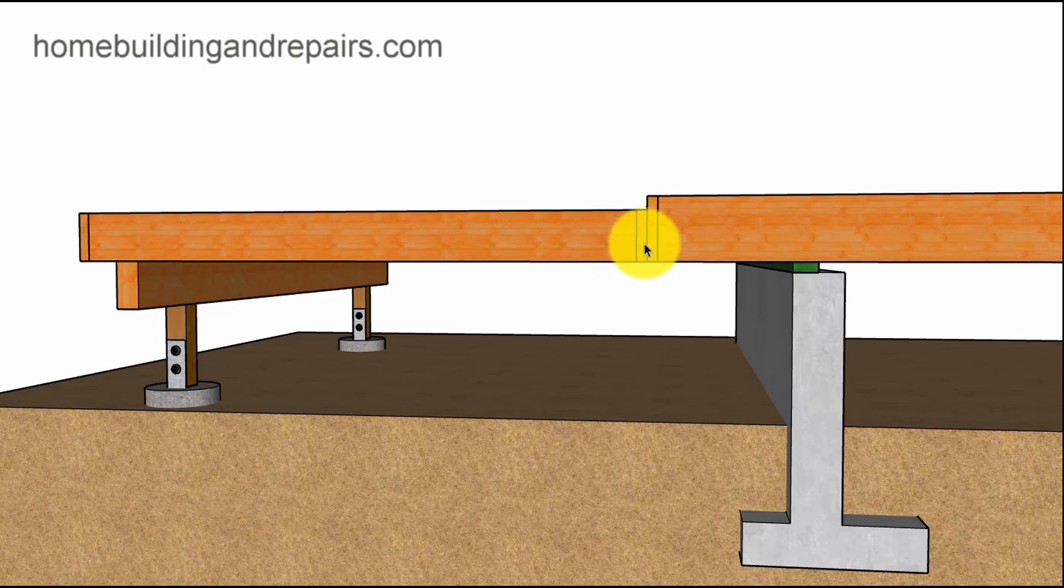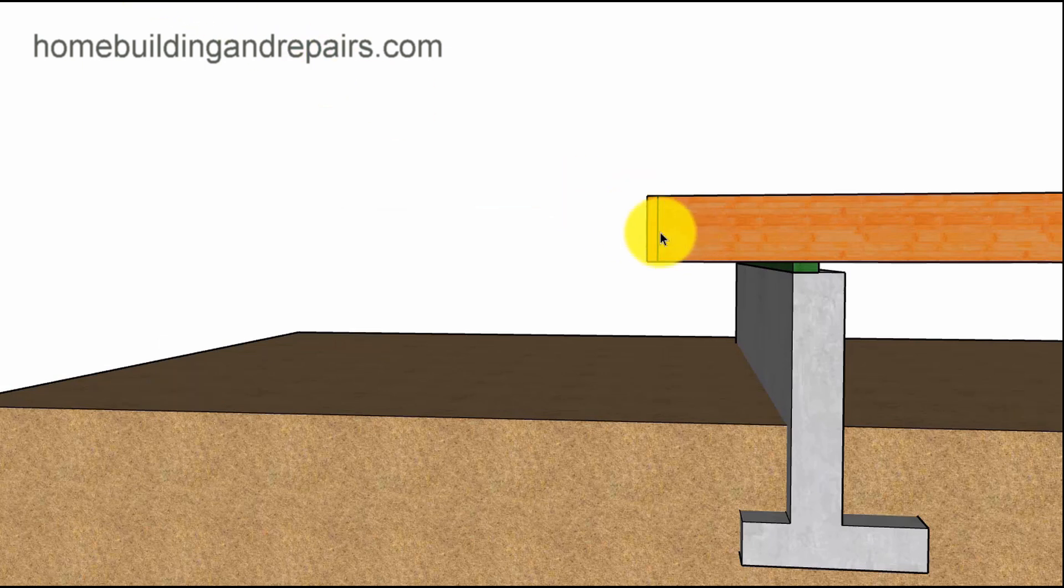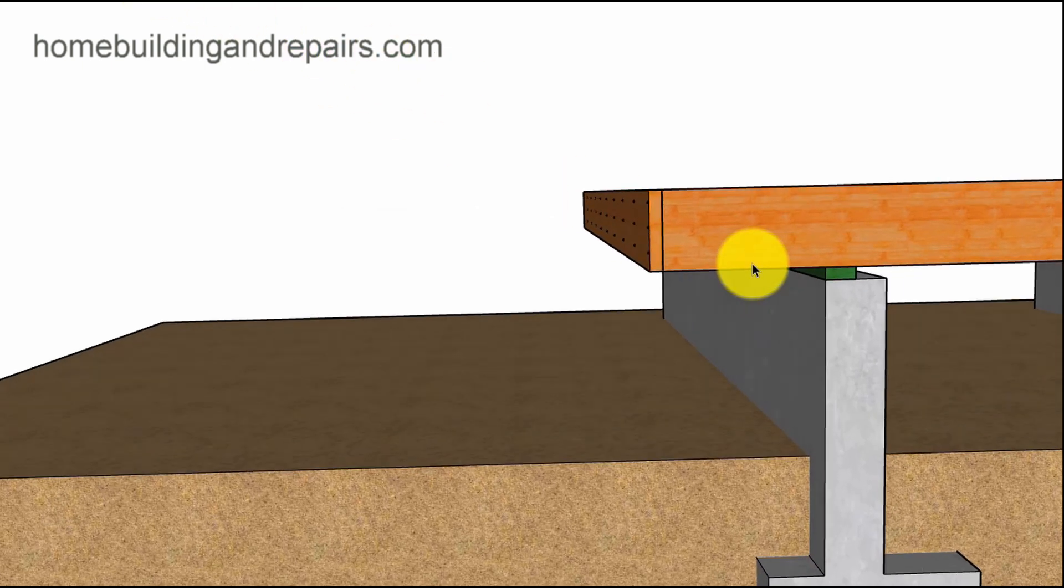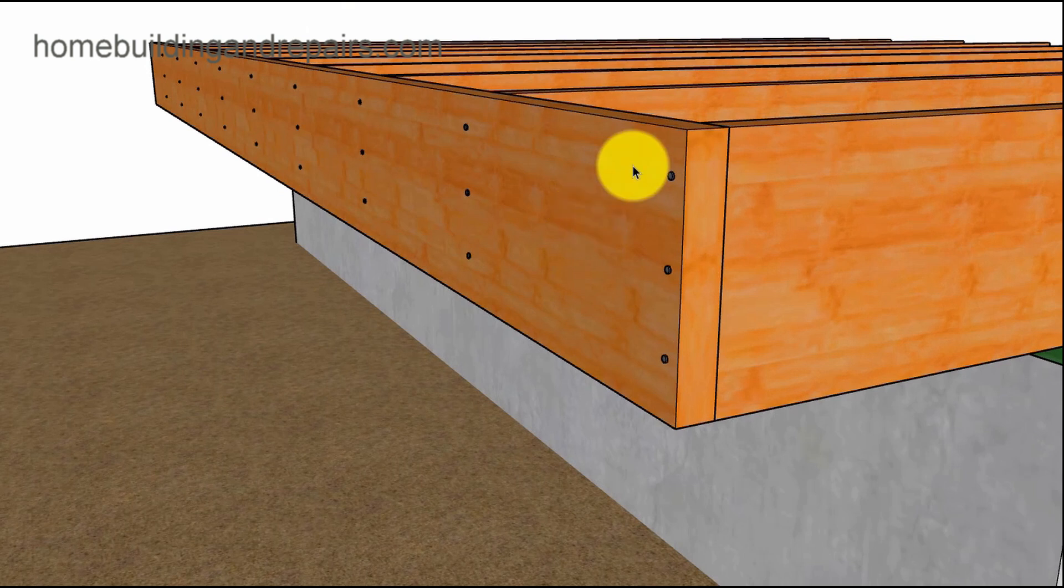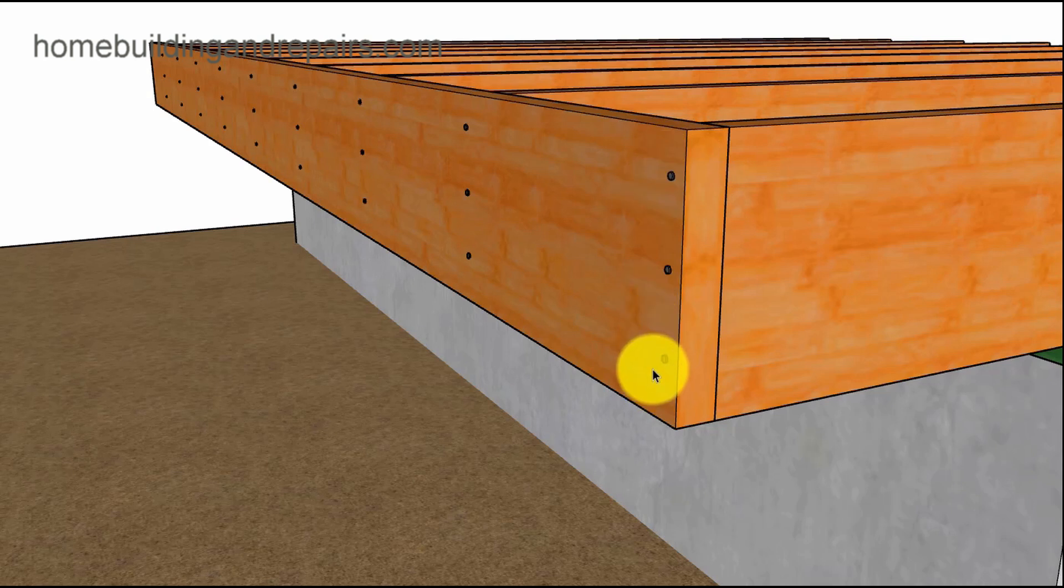Now the cantilever itself didn't come apart. What I'm gonna speculate here is that the ledger, if this is a 2x10 we have here, inch and a half by nine and a half, usually has three nails but can have four nails, and in my opinion when you put some weight on this it can actually pull the ledger down.